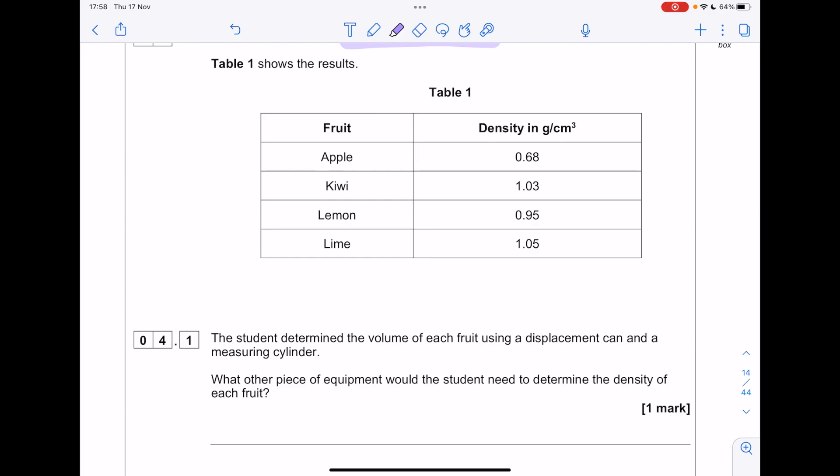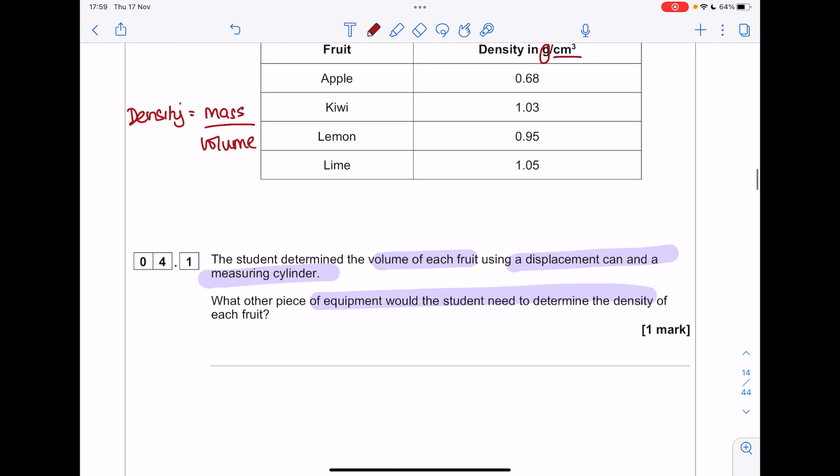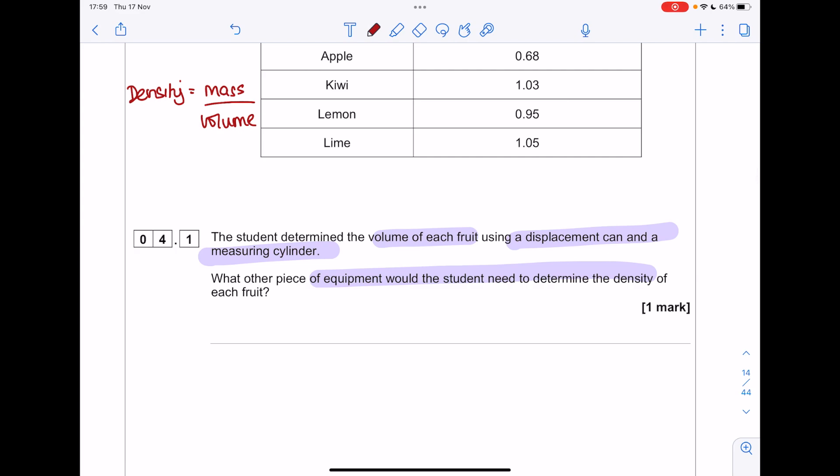The student investigated the density of different fruits. Table 1 shows the results. The student determined the volume of each fruit using a displacement cannon measuring cylinder. What other piece of equipment would the student need to determine the density? Remember, density equals mass in grams divided by volume. You can even work it out from the table. So you would need a balance.